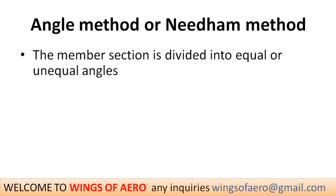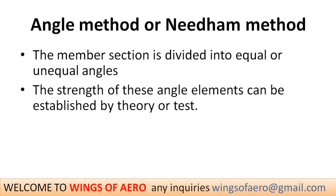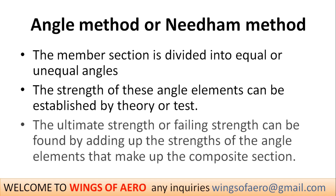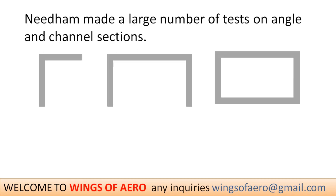In the Needham Method, the member section is divided into equal and unequal angles. The strength of these angle elements can be established theoretically or by means of tests. The ultimate failing strength can be found by adding up the strength of the angle elements that make up the composite section. Needham made a large number of tests on angle and channel sections.